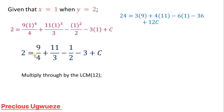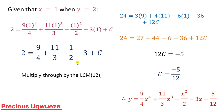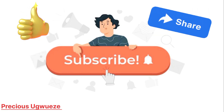Continuing: 12 times 3 is 36 and 12 times C is 12C. Collecting like terms, everything on one side gives minus 5, so 12C equals negative 5. Dividing both sides by 12 gives C equals negative 5 over 12. Substituting this back into the original expression for y gives the complete final answer. That is all for this video — please subscribe to our YouTube channel and like and share our videos.